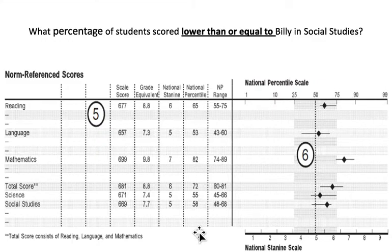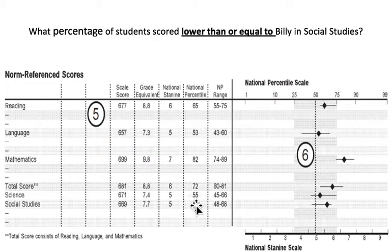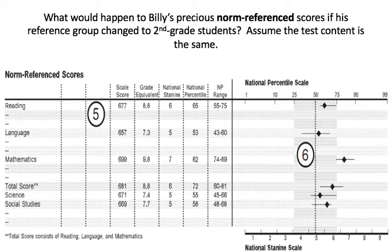If I ask what percentage of students scored lower than or equal to Billy, you can give me the national percentile — that is the correct answer. If I asked how many students scored lower than Billy, you would have to say you can't tell, because some students scored the same. In many cases there are only 40 to 60 questions and a good percentage of people got the same score, especially in the middle of the pack. If I asked how many scored better, you can find that by subtracting the national percentile from 100. So: don't know lower than, do know lower than or equal to, do know greater than. If the reference group changed to second graders, Billy's scores would go up because he'd be compared to a generally lower-skilled group.